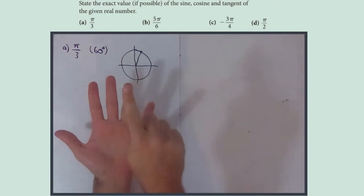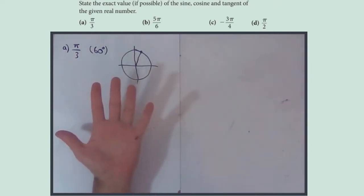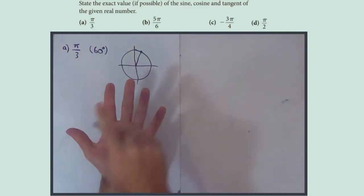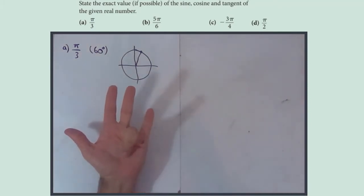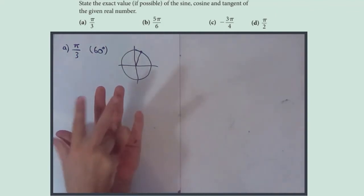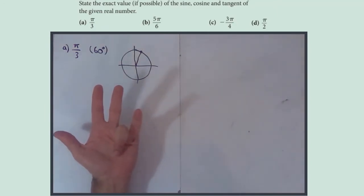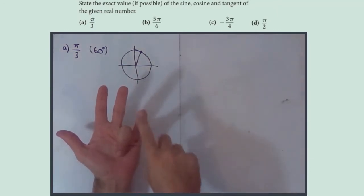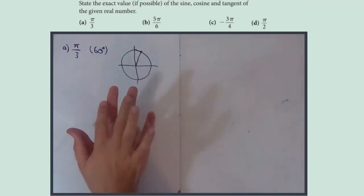What you do is find the finger that represents your angle — zero, 30, 45, 60 — then put that finger down. Sine of that angle is the square root of the number of fingers on the left-hand side over two, so root 3 over 2. Cos of the angle is root of the right-hand side over two.